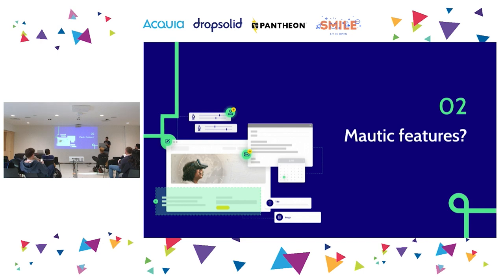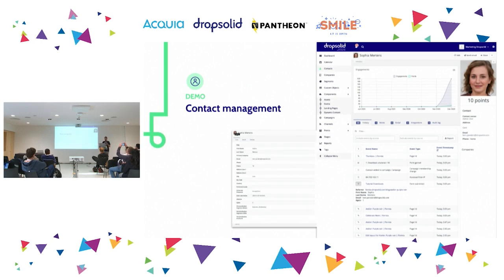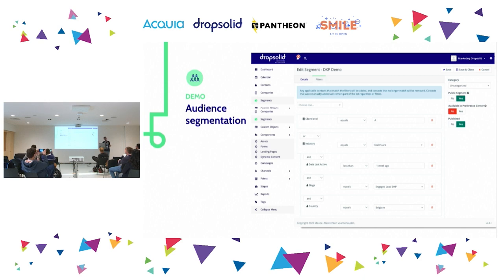Let's look at what's in the product. I've selected the nine main features. The first is contact management: when someone surfs your website, their behavior is tracked in a database — all the pages clicked, forms submitted, points gained. Once someone submits an email address, the whole history gets attached to that person. That's how we identify users.